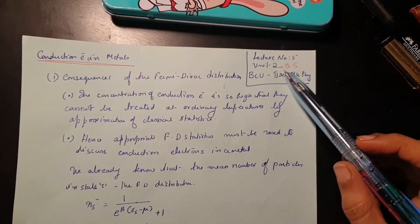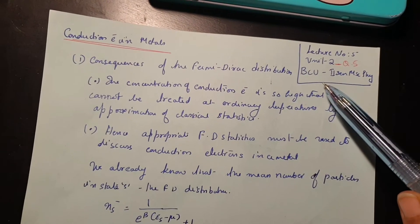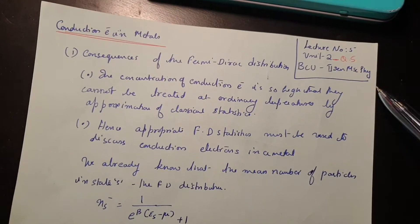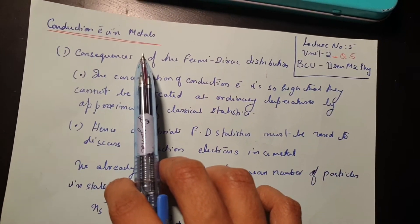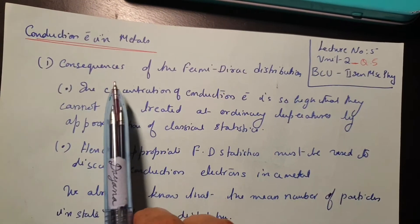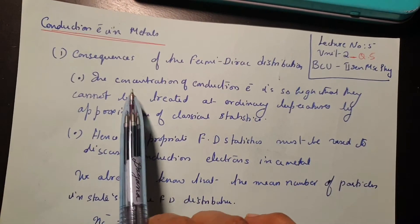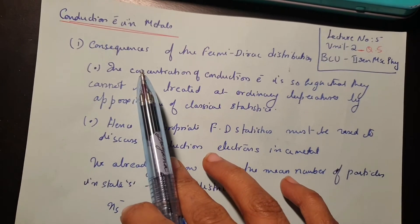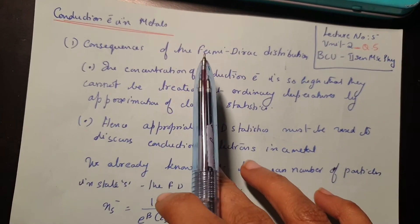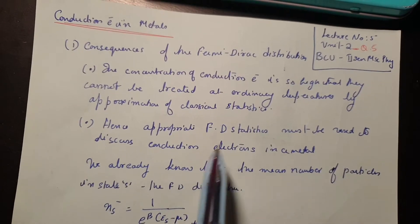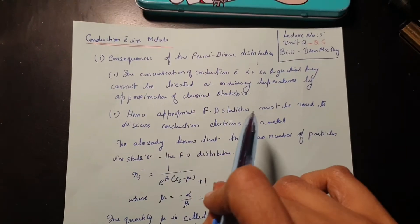Hello everyone, this is lecture number 5 of unit 2, Quantum Statistics, BCU second semester emissive physics. The next topic we have is conduction electrons in metals.